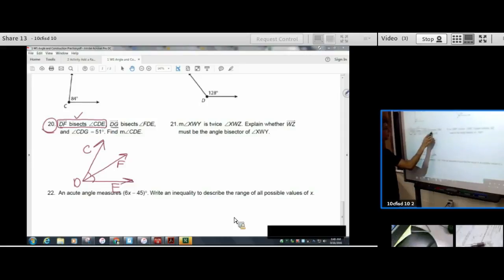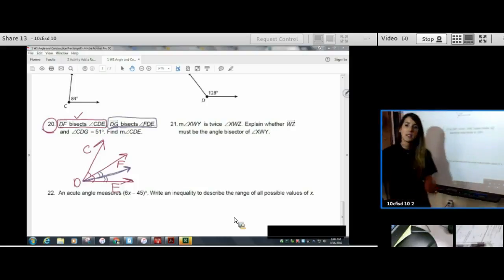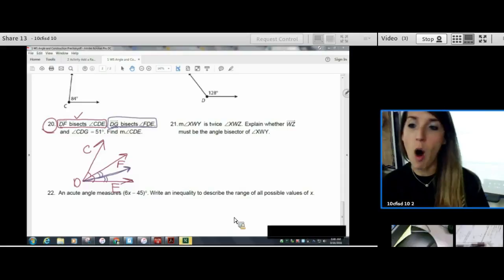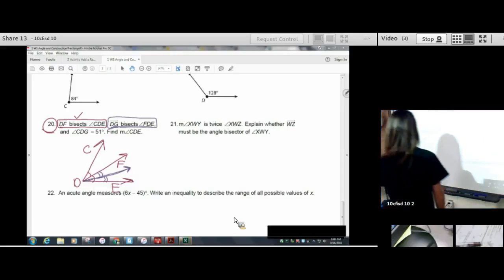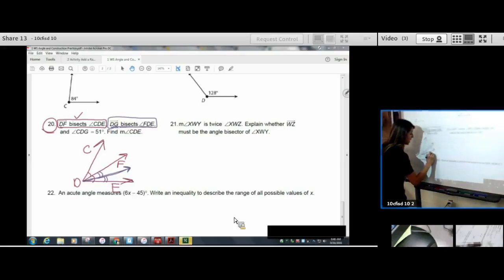Now it says ray DG bisects FDE. So there's another ray. Pretend that was perfect. Cutting that one in half. I've already used a single arc, so now I need to use a double arc. I don't want to use a single arc again, because those angles are smaller than the first one. Yeah, it's a lot of rays. That's what angles are. They're made up of lots of rays. I'm going to put a G here.